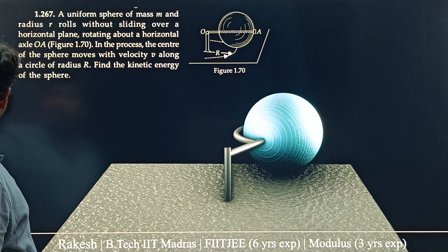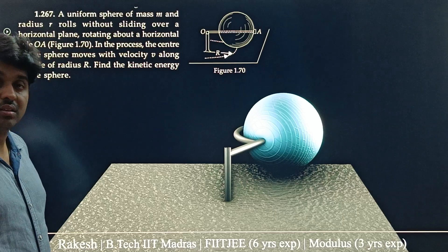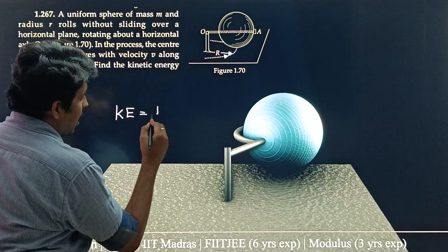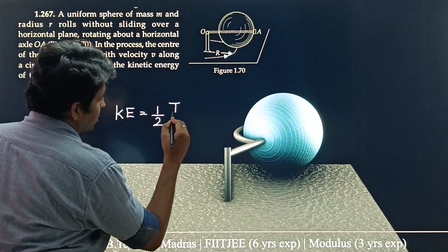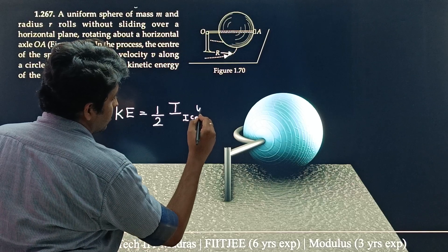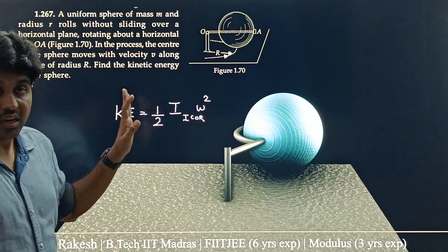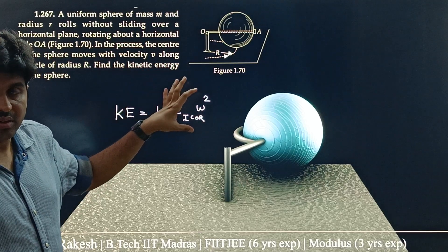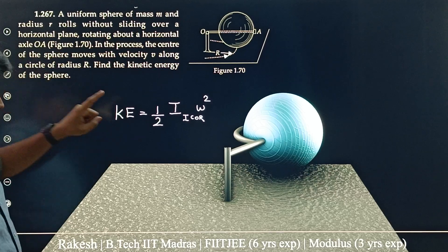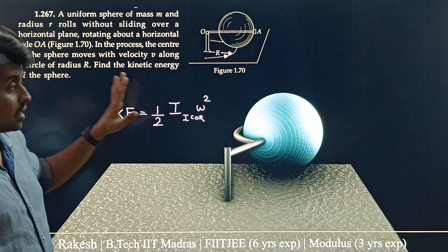What we will be using here is, we will be using the formula kinetic energy equal to half I, the instantaneous axis of rotation, into omega square. In this one step we will be completing the formula. First we will find the omega, then we will move on to the moment of inertia and that is it.